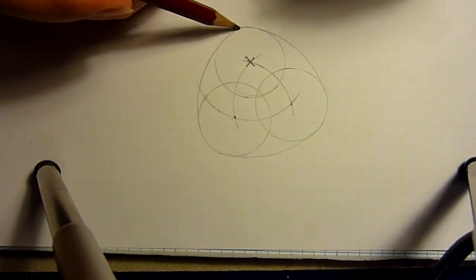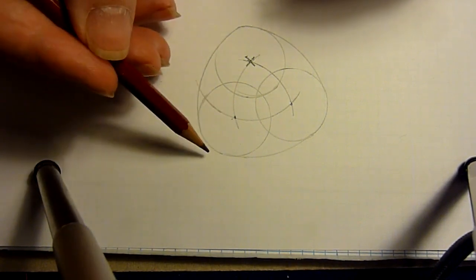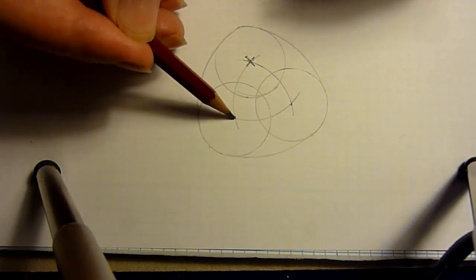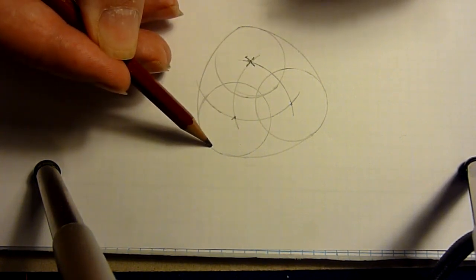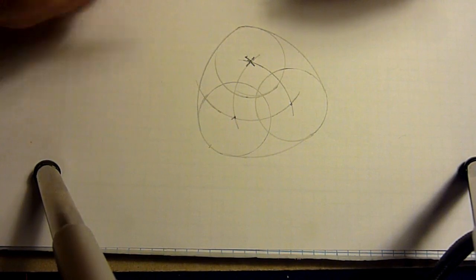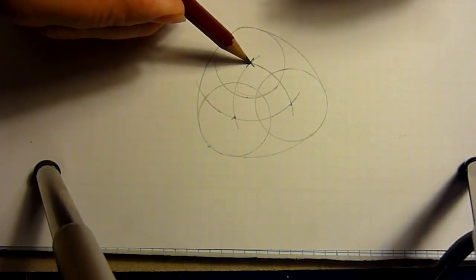And it should work in the same way because you have again the same distance from side to another here. And now you should see how it looks like when this one is turned around this point here.